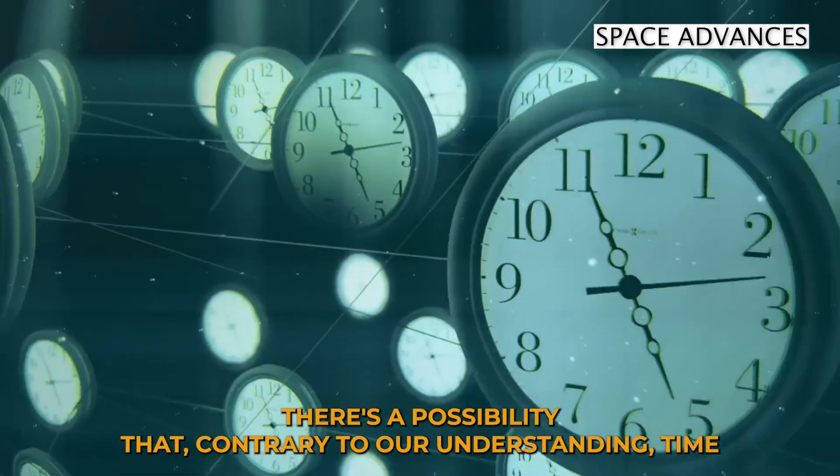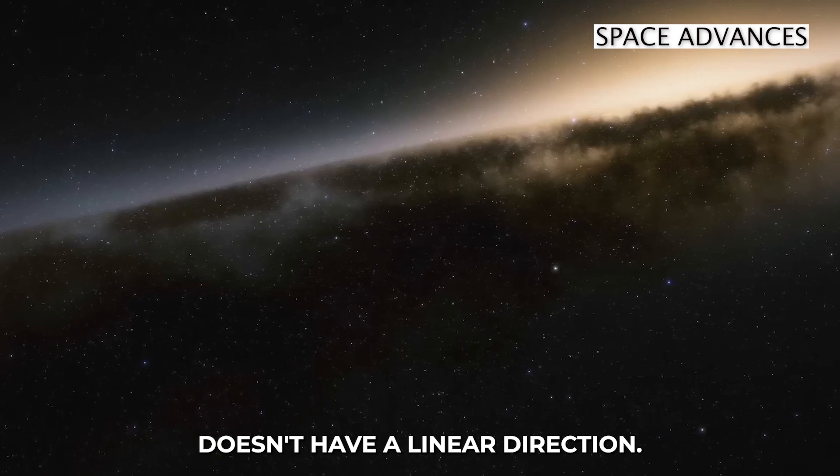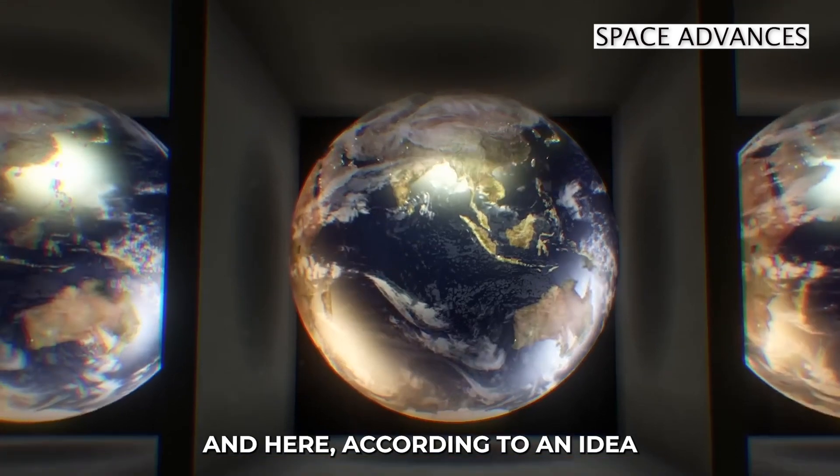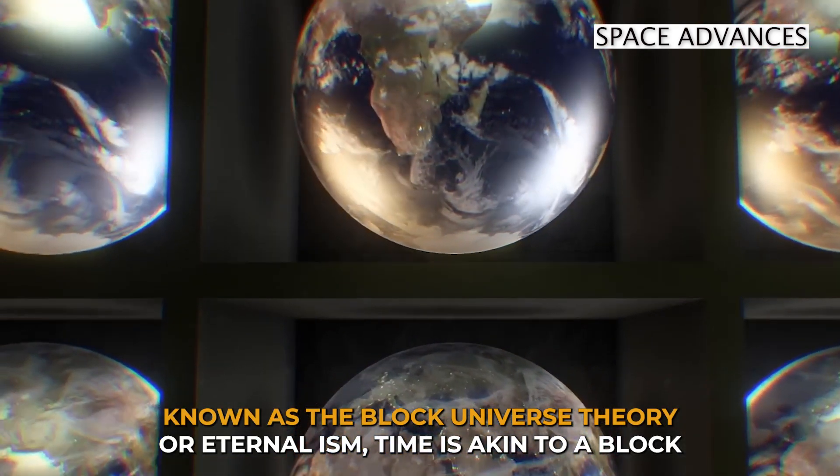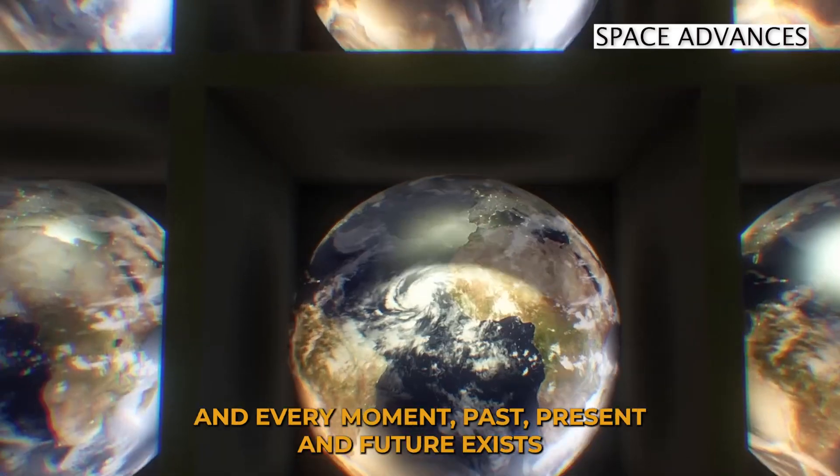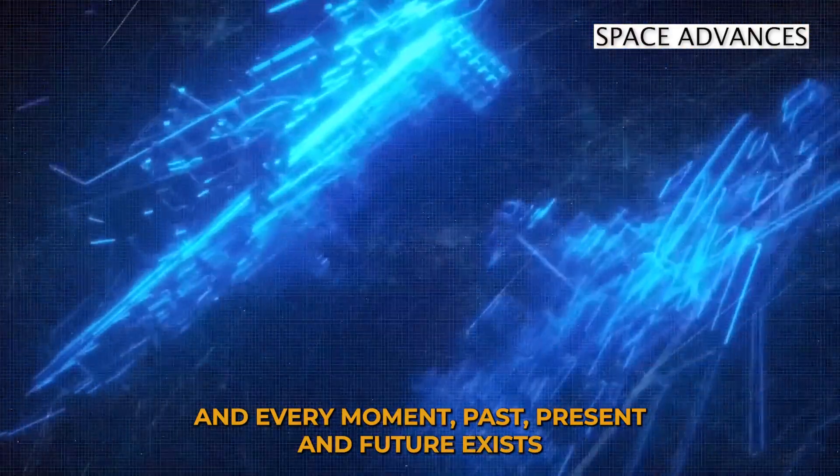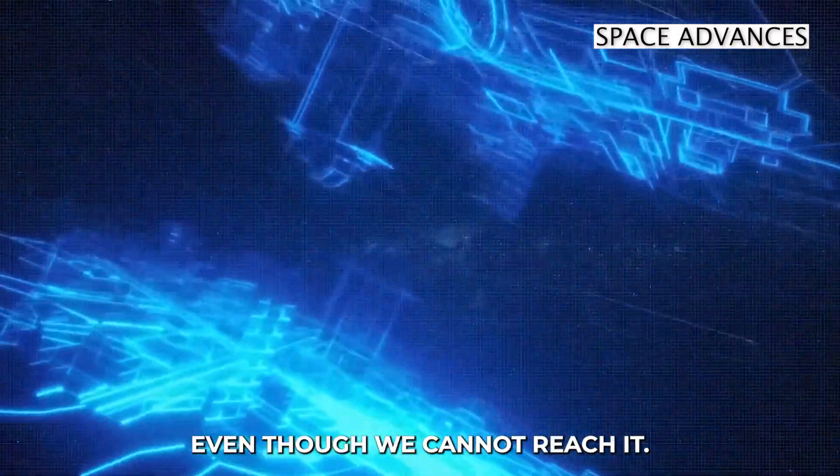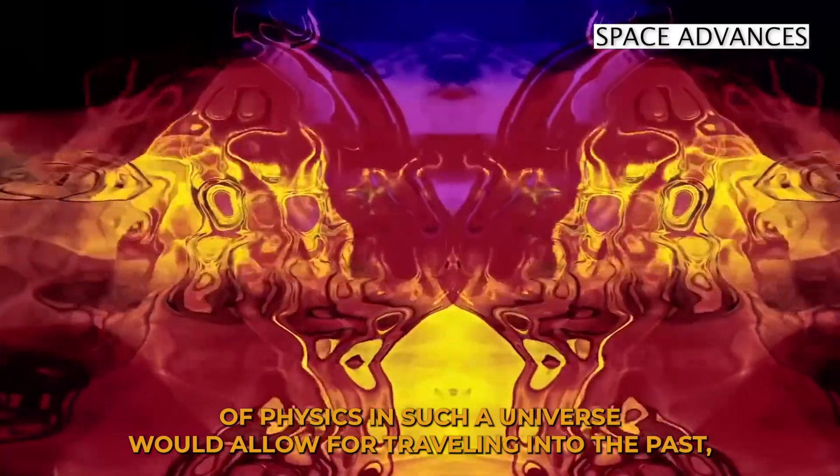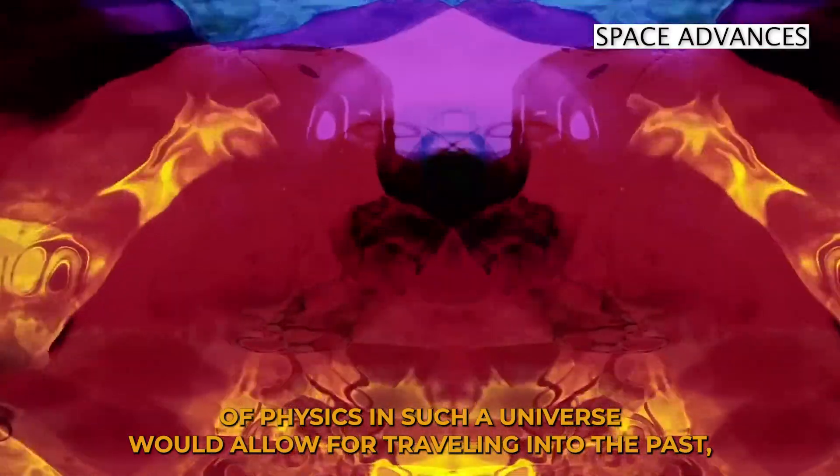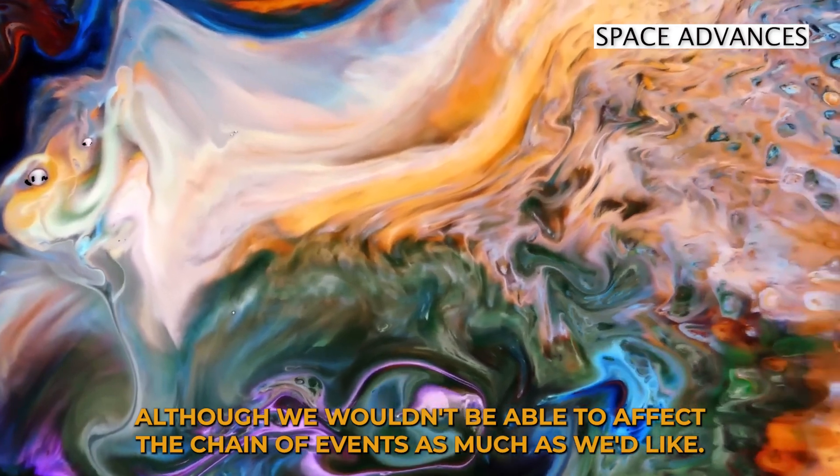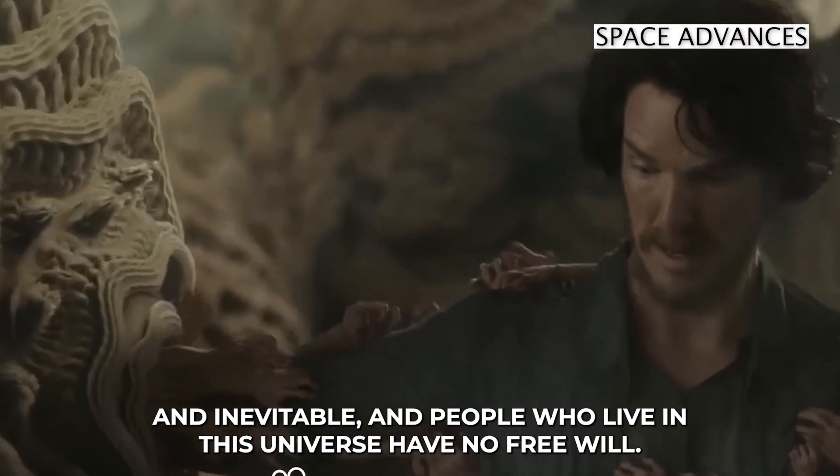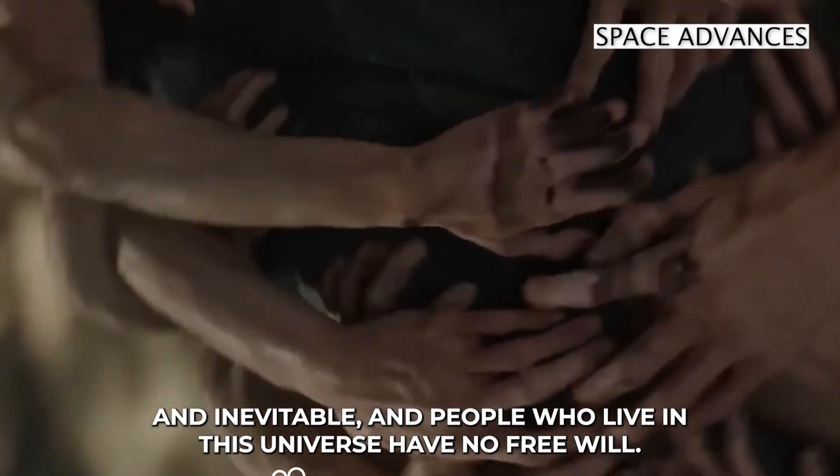There's a possibility that, contrary to our understanding, time doesn't have a linear direction. If space and time is one, there may be no difference between then and there, or now and here. According to an idea known as the block universe theory, or eternalism, time is akin to a block, and every moment, past, present, and future, exists on equal footing. Just like there is space outside of the visible universe, even though we cannot reach it. If true, the laws of physics in such a universe would allow for traveling into the past, although we wouldn't be able to affect the chain of events as much as we'd like. If the future already exists, then all events are predetermined and inevitable, and people who live in this universe have no free will.